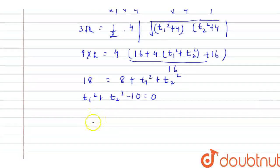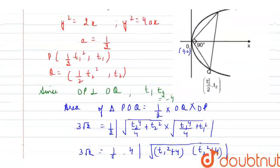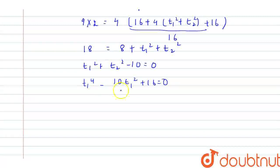We are left with, if I will be separating it, so I will be left with, t1 to the power 4 minus 10 of t1 square plus 16 is equal to 0. While this calculation, I have used this thing also, that is, t1 t2 is equal to minus 4.